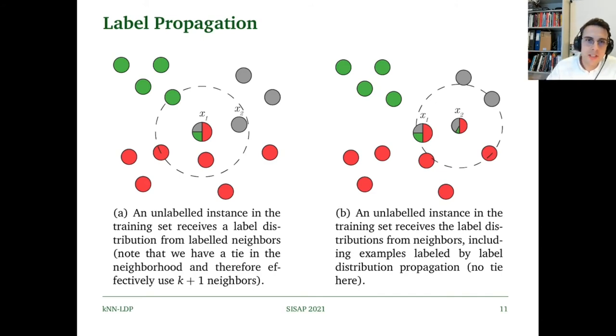Now, how can we use this for label propagation? As we can see here in figure A, we have two classes—red and green—and unlabeled is shown by the color gray. In the first iteration, a point receives a label distribution dependent on its crisply labeled neighbors. In the second iteration, as we can see in B, the point is now labeled by two crisply labeled points as well as X1, which has received a label distribution.